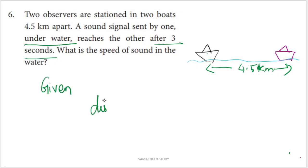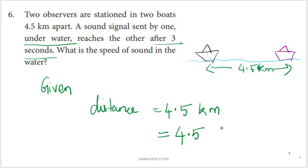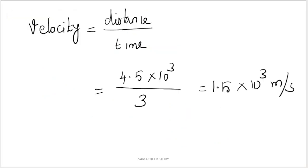The distance is 4.5 kilometers, which we convert to 4.5 × 10³ meters. Time is 3 seconds. So velocity = (4.5 × 10³) / 3 = 1.5 × 10³ = 1500 meters per second. This is the speed of sound in water.